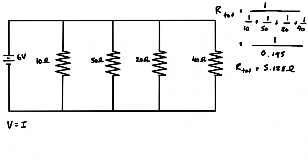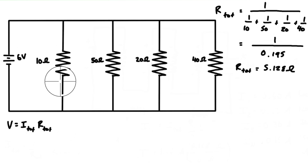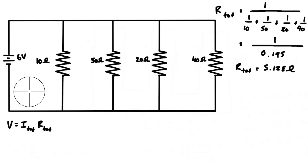The next thing we have to do is write Ohm's Law: V equals I times R. This gives us the total voltage drop from the top node to the bottom node, which is going to be 6 volts.